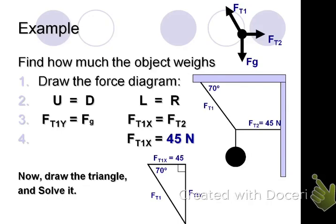Let's draw that triangle and solve. The triangle involves FT1x and FT1y. I can see that 70 degree angle. I'm going to draw it just like I see it in the diagram. There's a 70 degree angle there between FT1 and FT1x. FT1x, I know, is 45 newtons. What side of the triangle is FT1x? That's adjacent. It's the one touching that 70 degree angle. And FT1y is what I need to find.